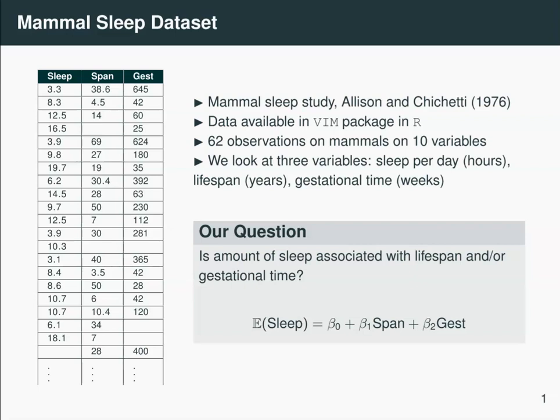In this case, our model, sometimes called the substantive model here, as opposed to the imputation model which we'll look at later, is given like so. Now we're going to look at three ways of coming up with estimates of the intercept, the effect of span, and the effect of gestational time, given that we've got some missing values in this dataset.